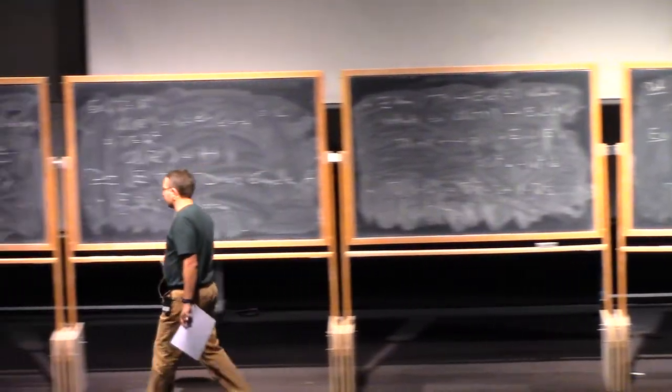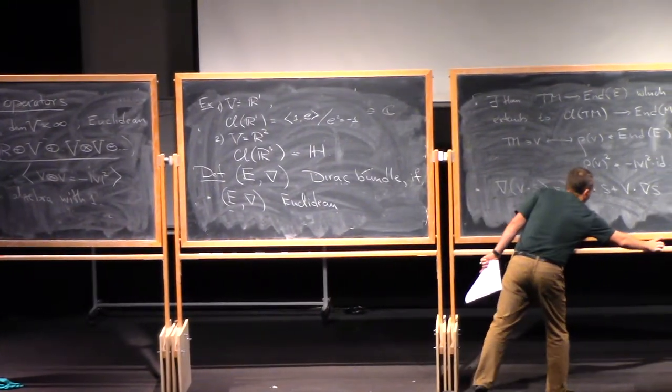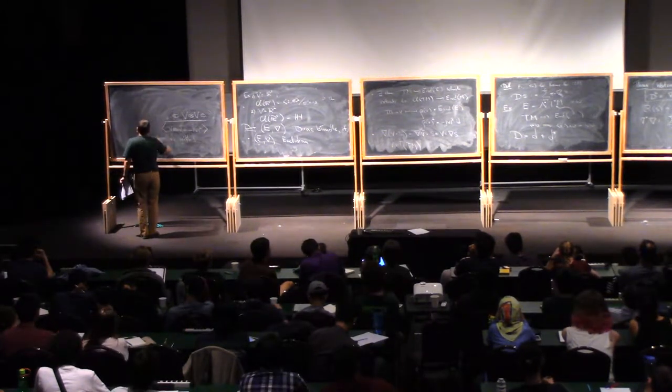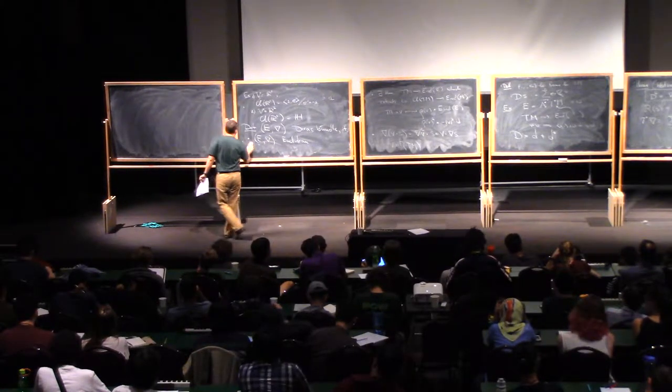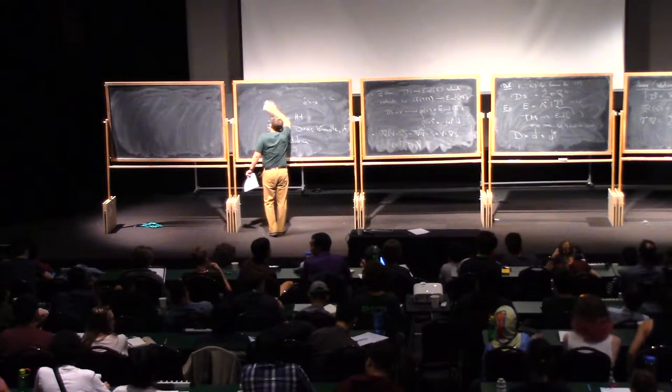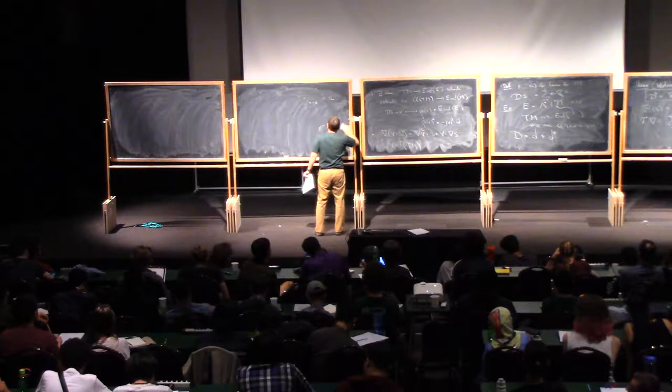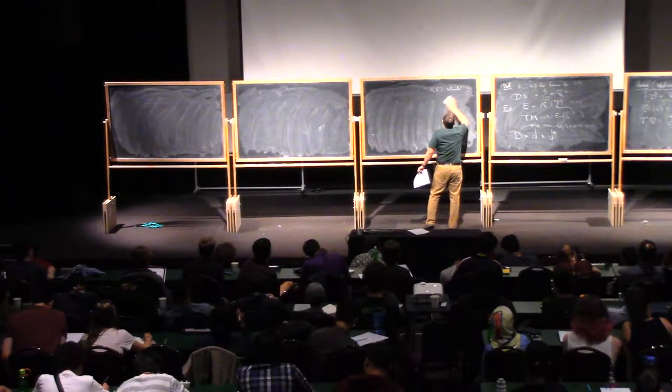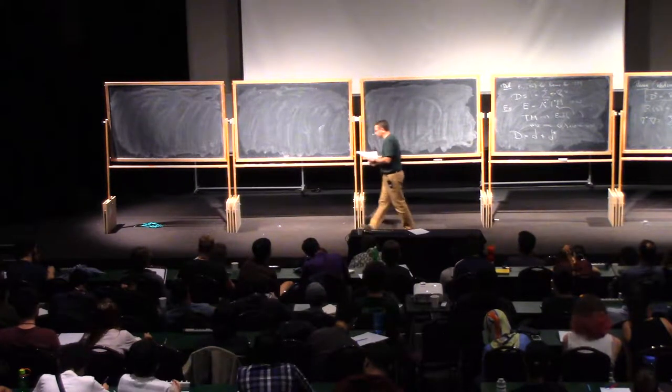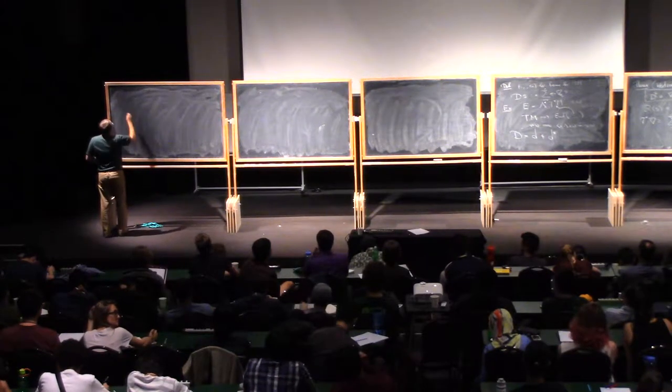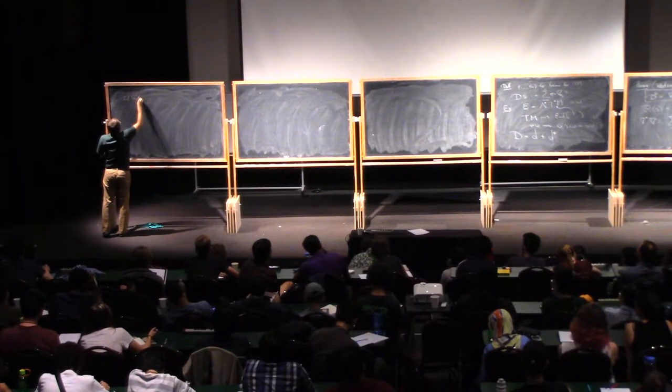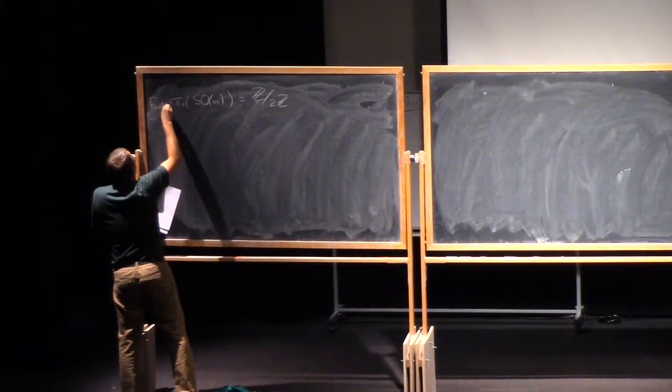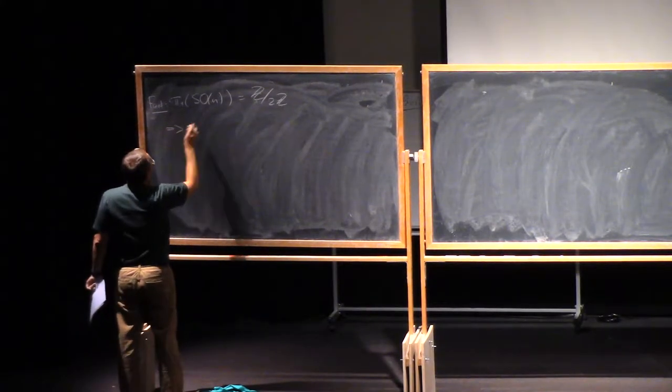Okay. In the remaining time, I wanted to discuss a bit a particular example of the Dirac operator that we will need in the sequel, and this is related to the notion of a spin group and a spin structure. So, what you know, or what can be computed is that the fundamental group of the group SON is, in fact, Z mod 2Z. So, it's just a fact, if you wish.